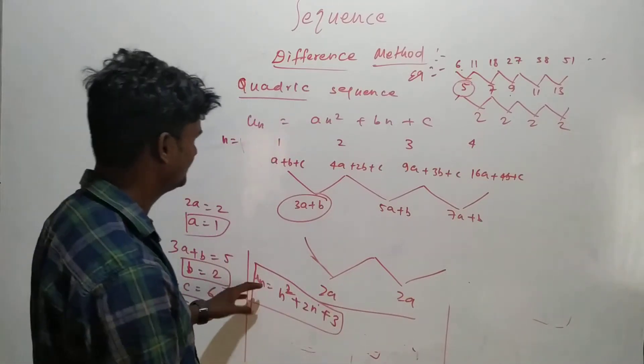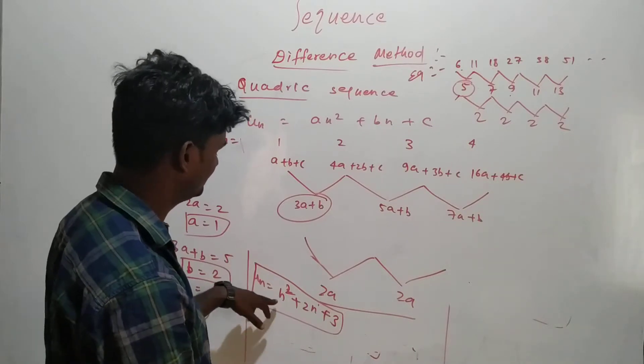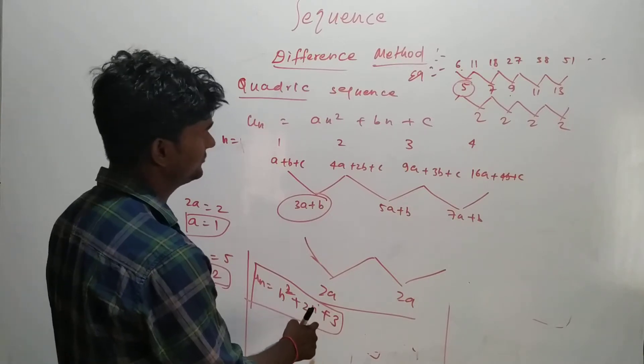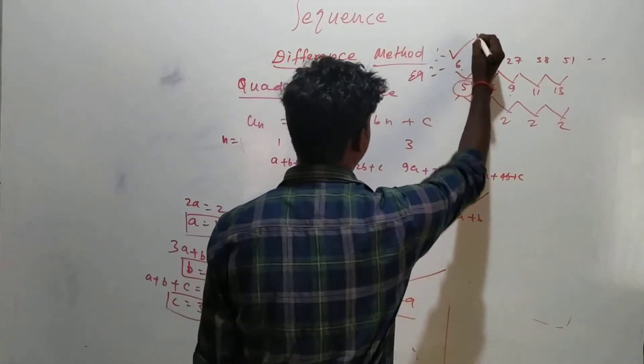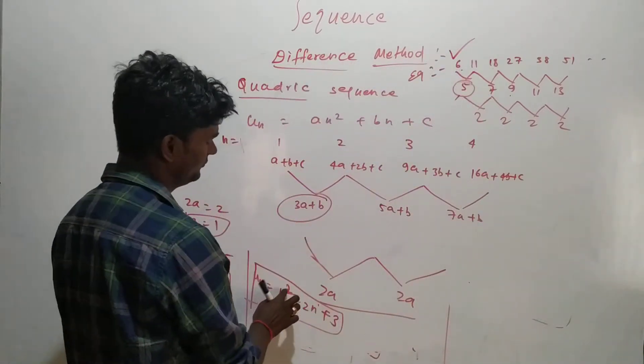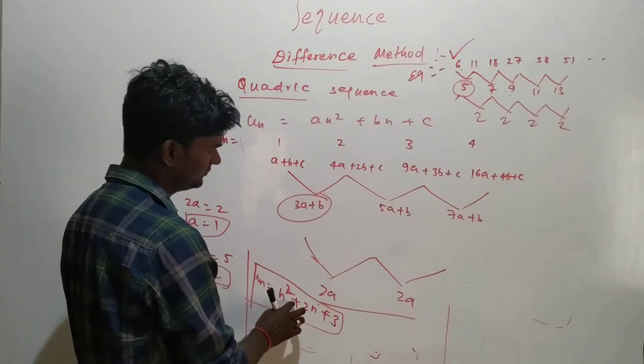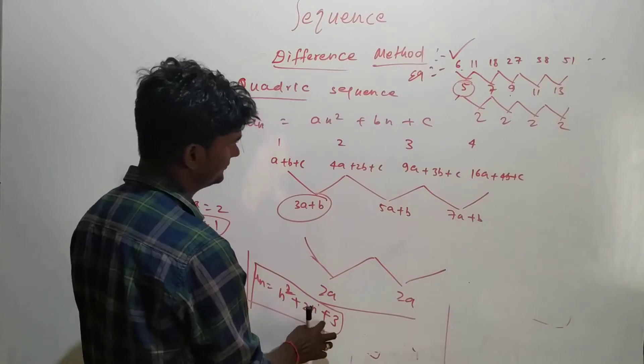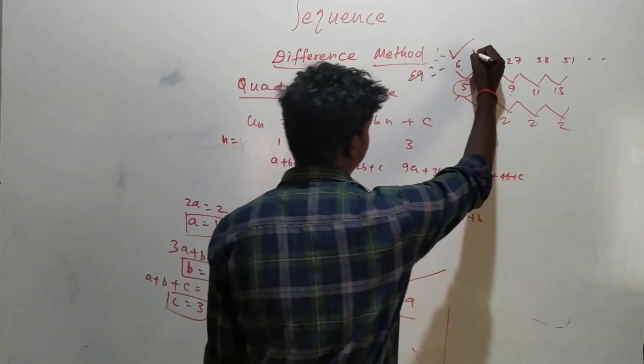Now if n you can substitute, if n equal to 1, what value are we getting here? So n equal to 1: 1 plus 2 plus 3, so 3 plus 3 is 6, so first term has to be 6 and we have that. And if n equal to 2, so 2 square is 4 plus 4 plus 3, so 8 plus 3 which is 11, and so on.